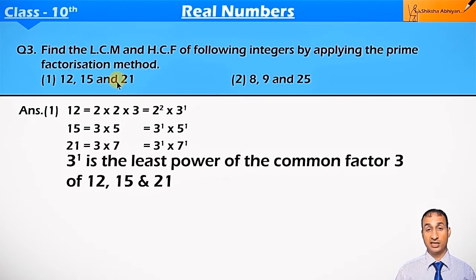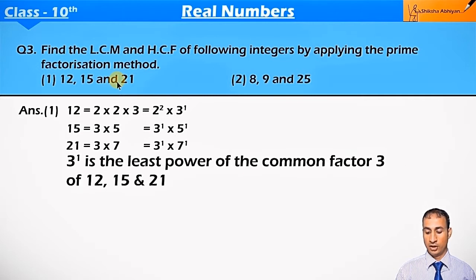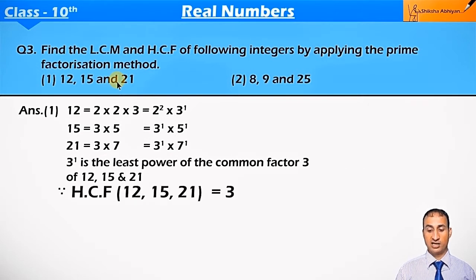Now, 3¹ is the least power of the common factor 3. The common factor for all is 3 whose least power is 1. So HCF of 12, 15, and 21 is equal to 3.